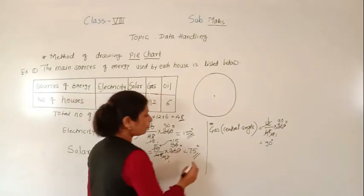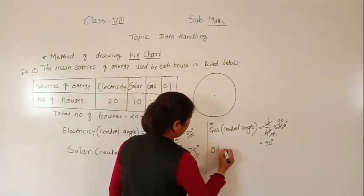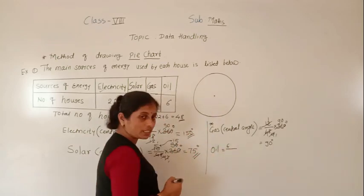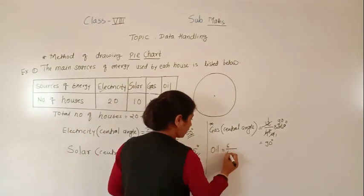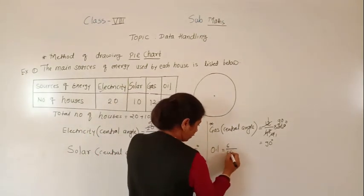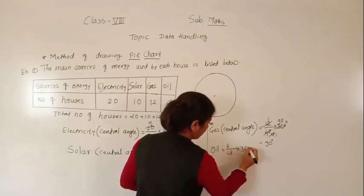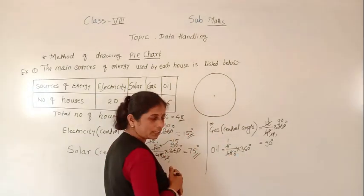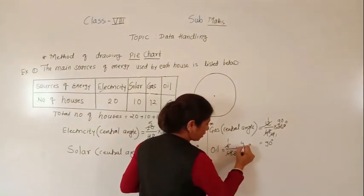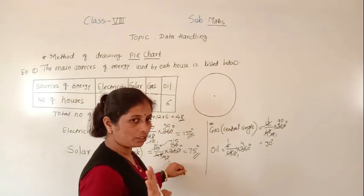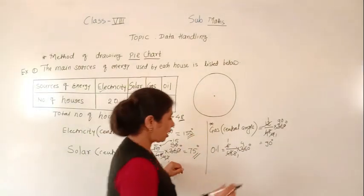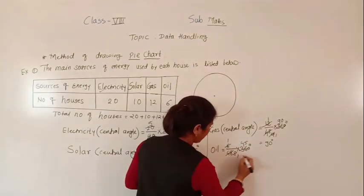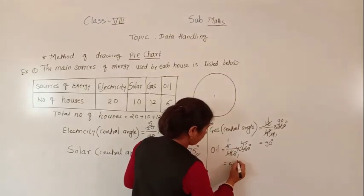For oil: 6/48 × 360. Simplifying: 6 eights are 48, then 8 fours are 32, remaining 4, and 8 fives are 40. So the central angle for oil is 45 degrees.